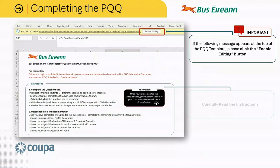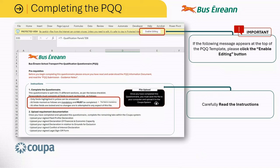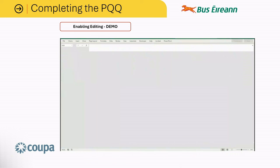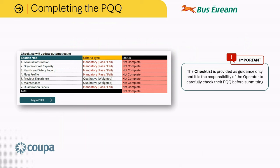Please carefully read the instructions section, paying particular attention to the fact that only fields highlighted in yellow can be answered and all other fields will be locked with no changes permitted. It is also important to note that certain fields are mandatory and these will be clearly marked throughout the form. At the bottom of the page, there is a checklist showing the breakdown of the questionnaire into seven sections. The status for each section will automatically update as you complete it; however, this checklist is provided as guidance only and it is the responsibility of the operator to carefully check their PQQ before submitting.